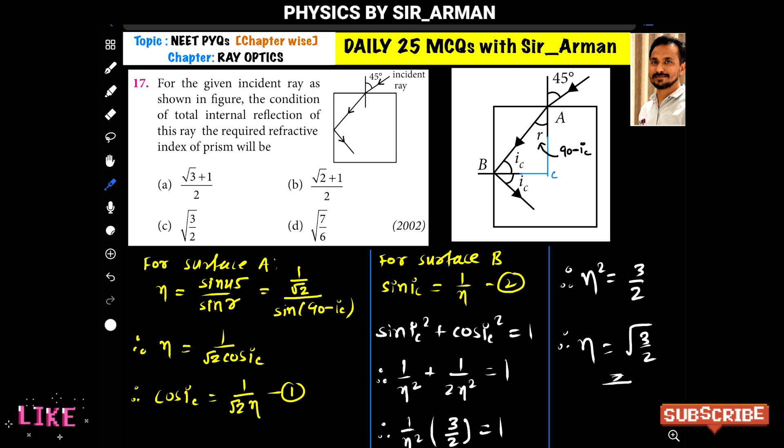Now sine 90 minus theta is cos theta, so we can rewrite this as n or refractive index equals 1 by root 2 and here instead of sine 90 minus ic I have written cos ic. If you make cos ic as a subject, then cos ic equals 1 by root 2 into n or eta.